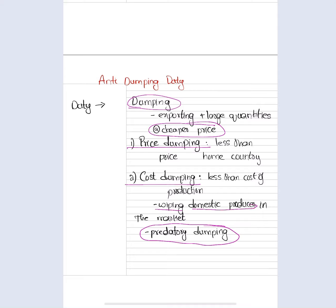China has tried this predatory dumping approach in the case of rare earth metals against Australia and the United States. Even though China is one of the largest holders of rare earth metal reserves, Australia and the USA also have reserves and had factories much earlier than China. With government support and this predatory dumping strategy — as part of their geopolitical thinking — China exported rare earth metals to Australia and the USA at a very cheap price, causing industries there to shut down.